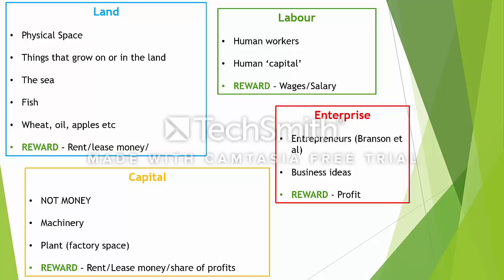Those are the factors of production — they work in coordination with each other to produce goods and services. And don't forget that pretty much all of the factors of production are scarce, which is what we looked at last time.